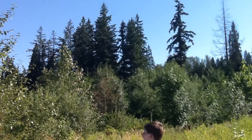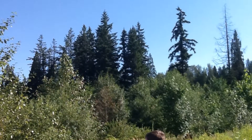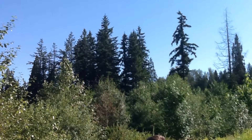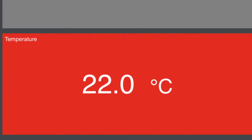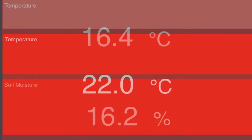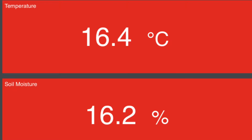After the grassland, we traveled to the forest. The air temperature was 22 degrees in the forest. The soil temperature in the forest is 16.4 and the soil moisture is 16.2.